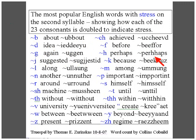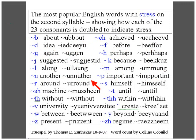Further examples include: 'perhaps,' 'suggested,' 'because,' 'along,' 'among,' 'another,' 'important,' 'around,' 'himself,' and 'machine.'